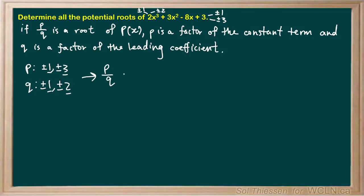So our potential p/q values are: let's start with 1 and 1. We have 1/1, and as I said, I like to add the plus or minus afterwards. So our first potential value is ±1/1, or just ±1.